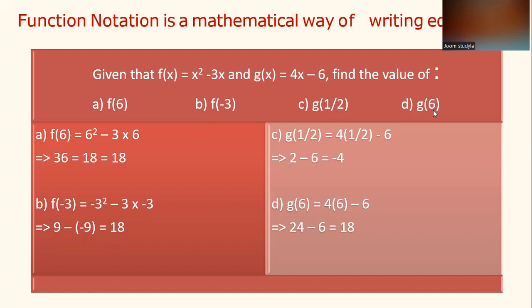And finally for question D, X takes up the value of 6. g(X) equals 4X minus 6, so g(6) equals 4 times 6 minus 6. So you have 24 minus 6 equals 18.